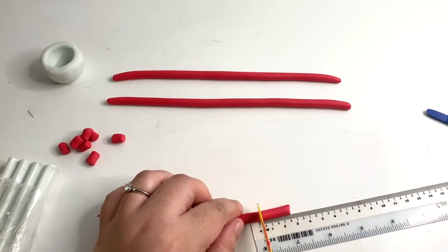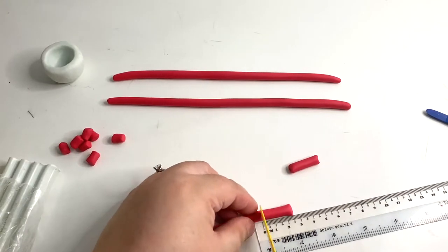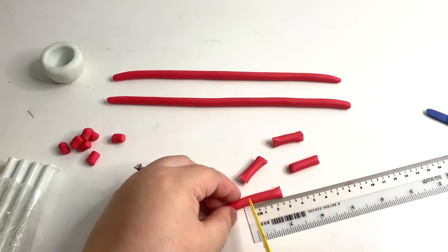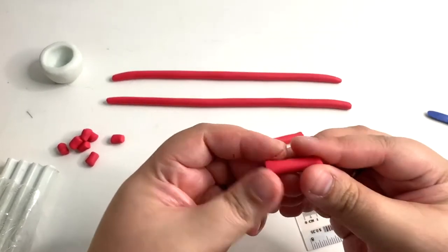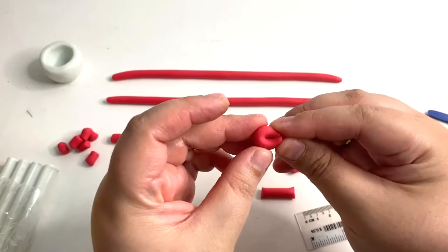Next design is the teardrop. Measure 2.5cm and cut. You will need about 10 pieces for this design. Fold your coil into half to make this shape. Pinch the end a little to secure the shape.